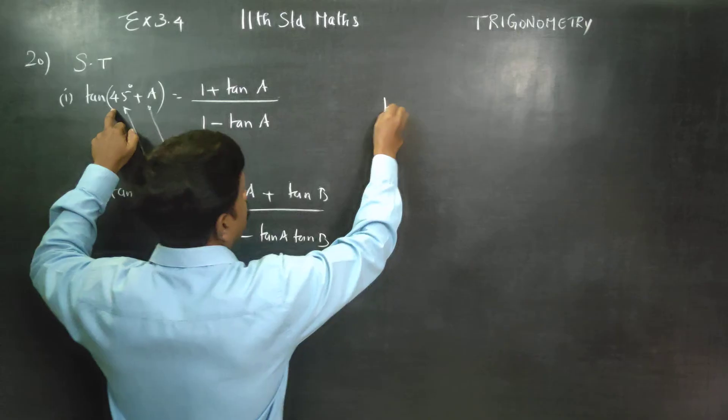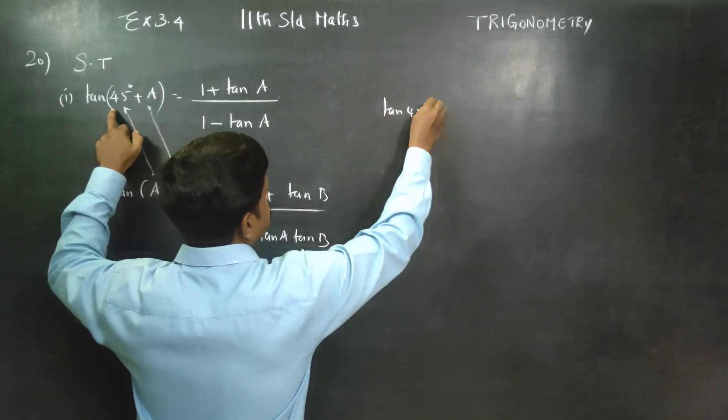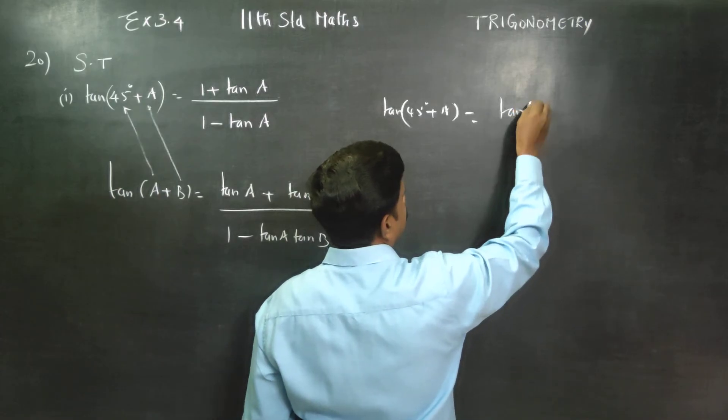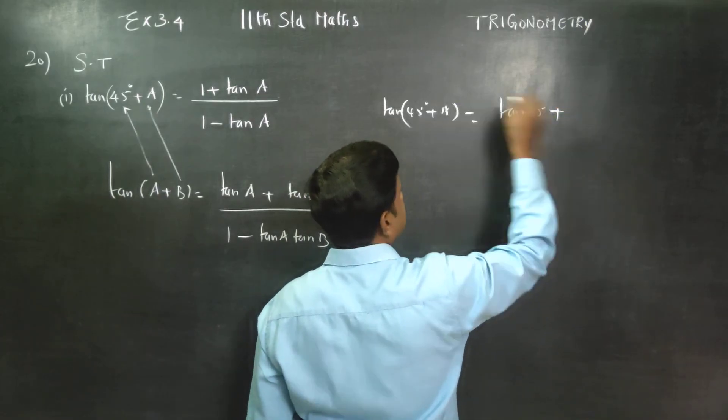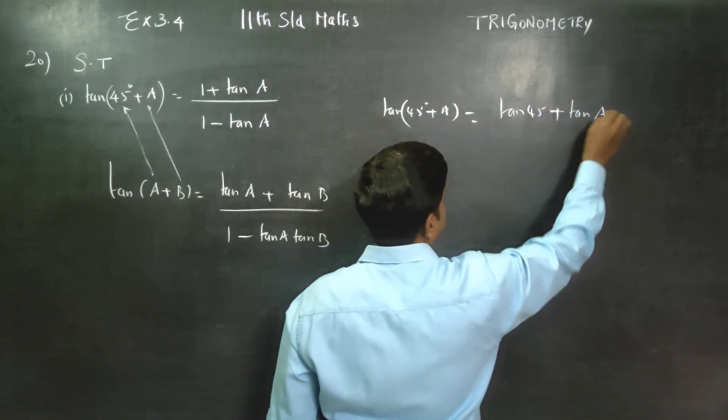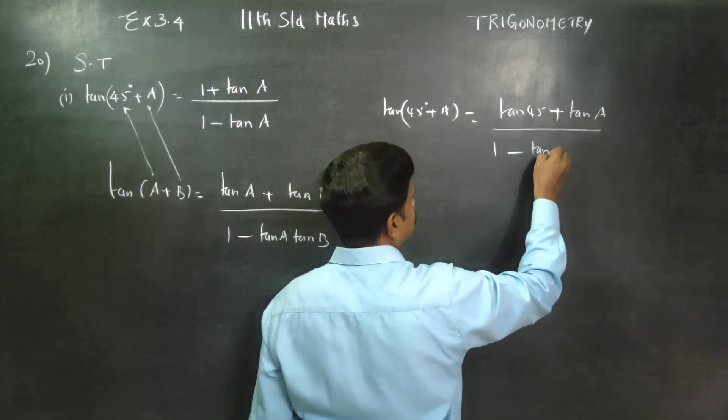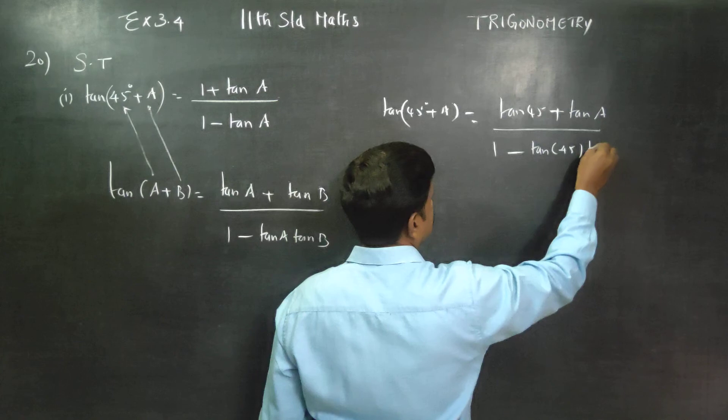What is tan 45 degree plus A? Then, tan A, tan 45 plus tan B, tan B is equal to tan A, by 1 minus tan A tan B, tan 45 into tan A.